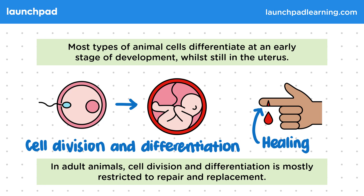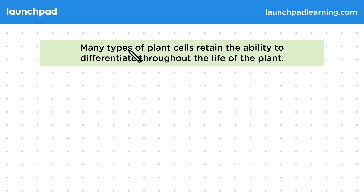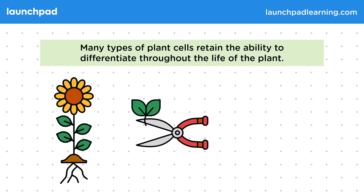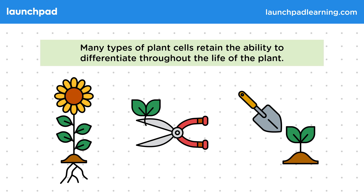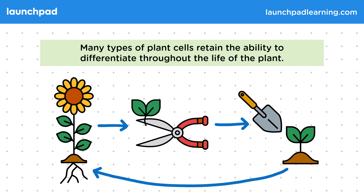When does cell differentiation happen in plant development? Many types of plant cells retain the ability to differentiate throughout the life of the plant. If you have a plant, you can take a cutting, replant it, and it will grow back. New roots, stems, leaves, and flowers have to grow, and plants can be seasonal. Therefore plant cells need to be able to divide and differentiate throughout their lifetime. You should be able to explain the importance of cell differentiation in plants.